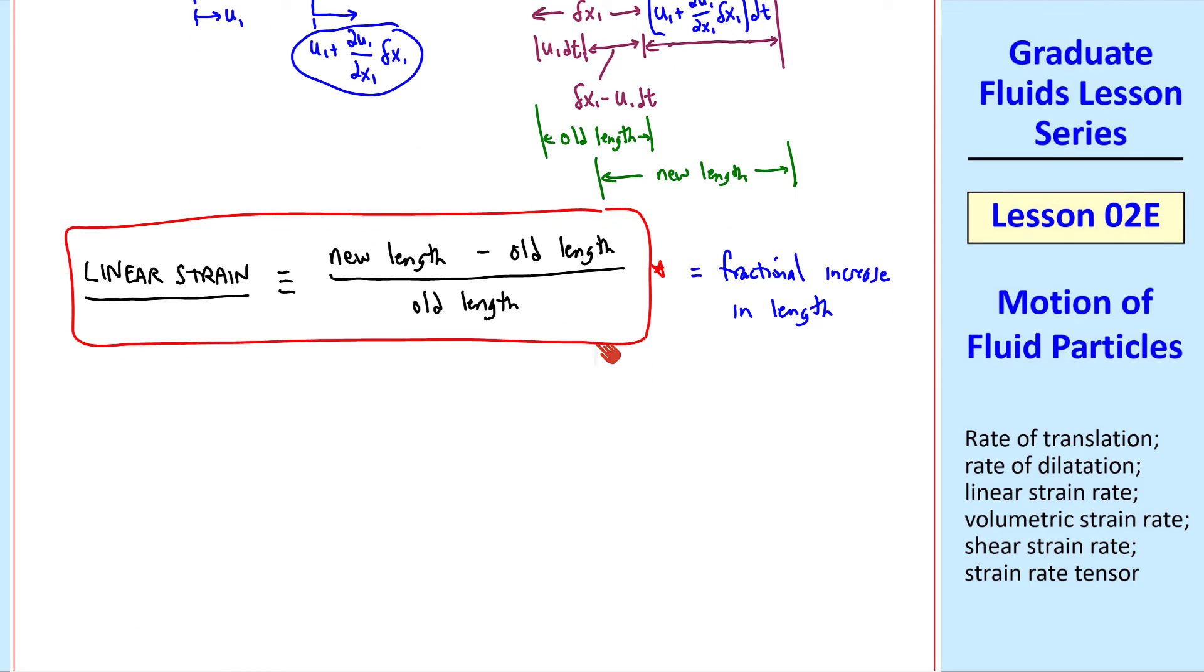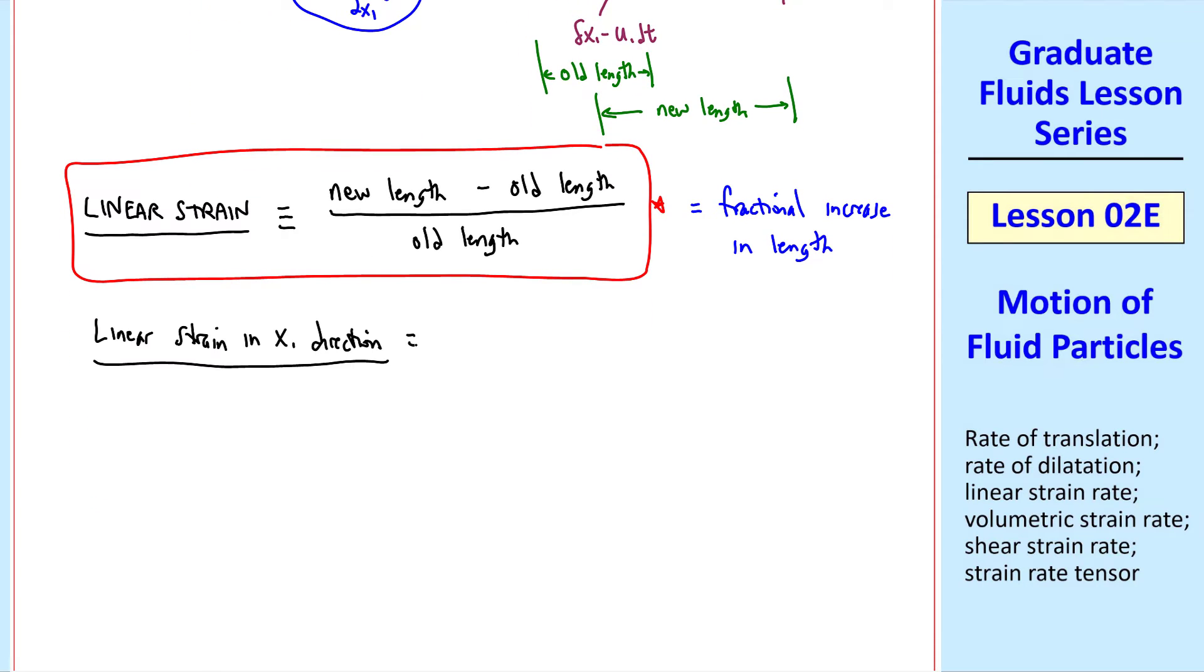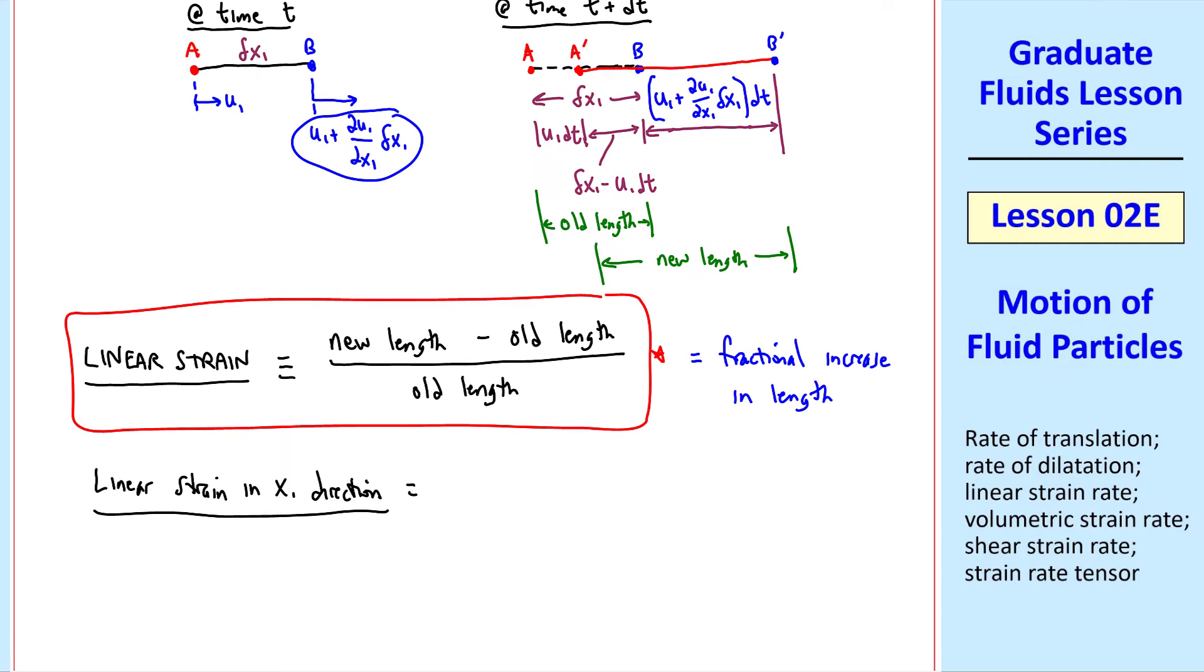So the linear strain in the x1 direction equals the new length from our diagram. It's delta x1 minus u1 dt plus u1 plus del u1 del x1 delta x1 quantity dt. That's the new length minus the old length, which is simply delta x1 divided by the old length, delta x1.